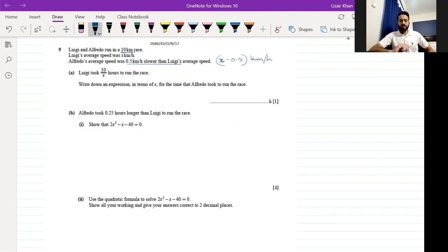Part A says that Luigi took 10 upon x hours to run the race. Write down an expression in terms of x for the time that Alfredo took to run the race. Now time is calculated by the formula distance upon speed. Since the distance is 10 kilometers and Alfredo's speed is x minus 0.5, this results in the expression for Alfredo's time: 10 upon x minus 0.5.